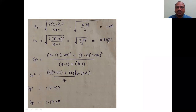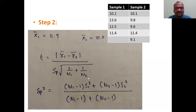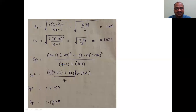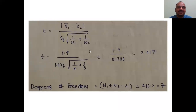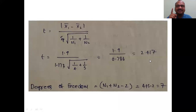With S₁ and S₂ calculated, substitute into the Sp² formula. This gives Sp² = 1.3757, so Sp = 1.1729. Now calculate the t-value: t = (x̄₁ − x̄₂) / (Sp × √(1/n₁ + 1/n₂)). Substituting x̄ values, Sp = 1.1729, n₁ = 4, n₂ = 5, we get the obtained t-value = 2.417.